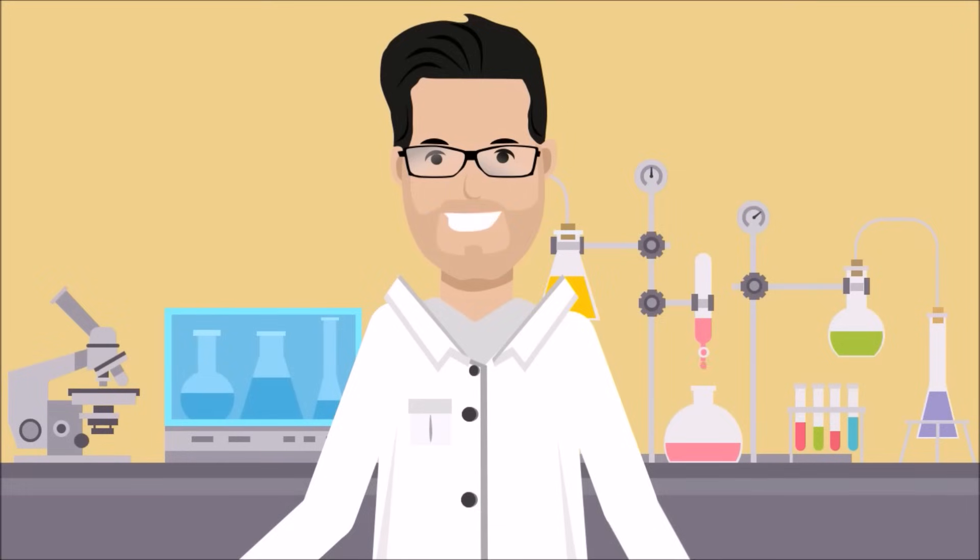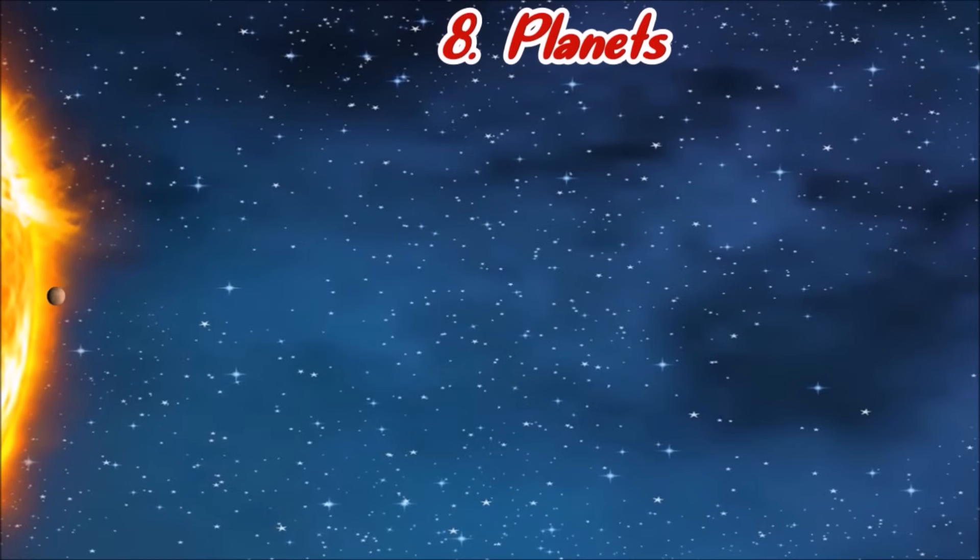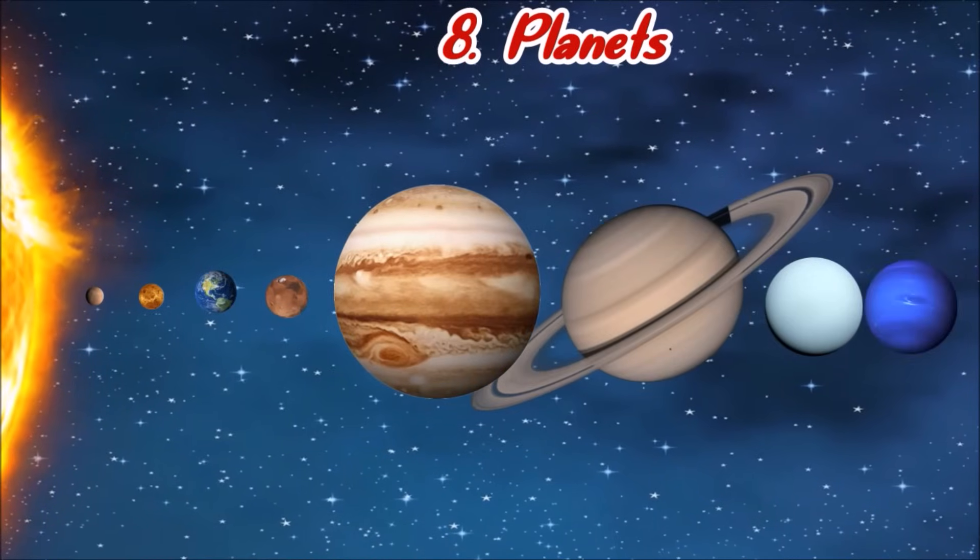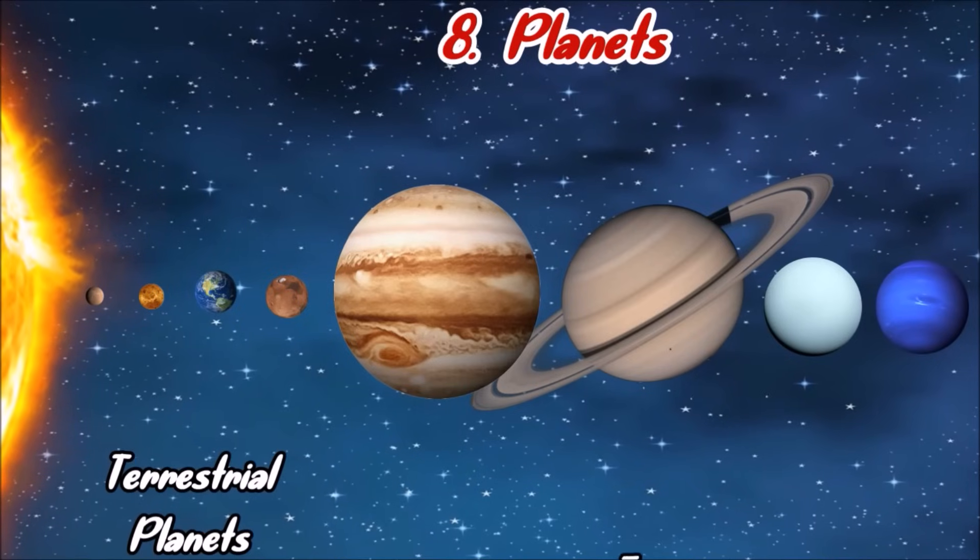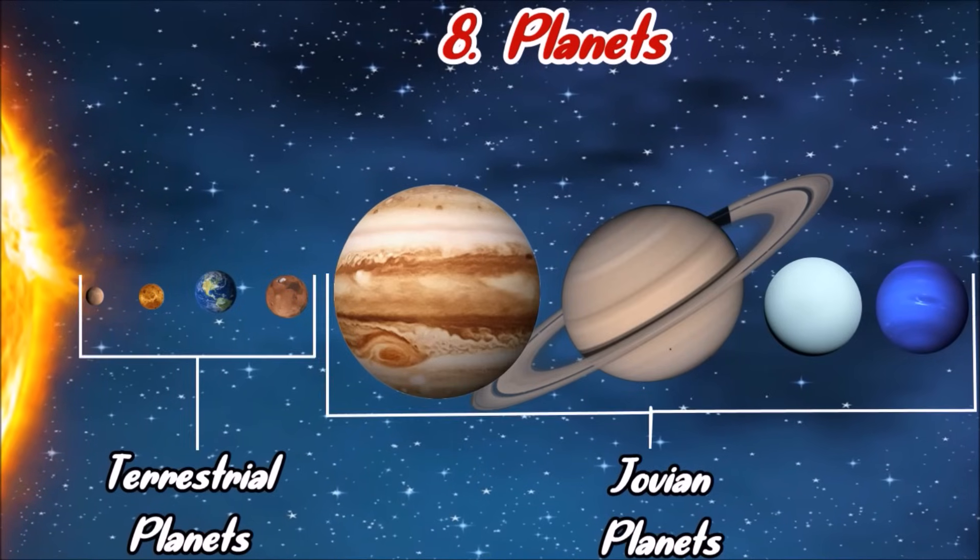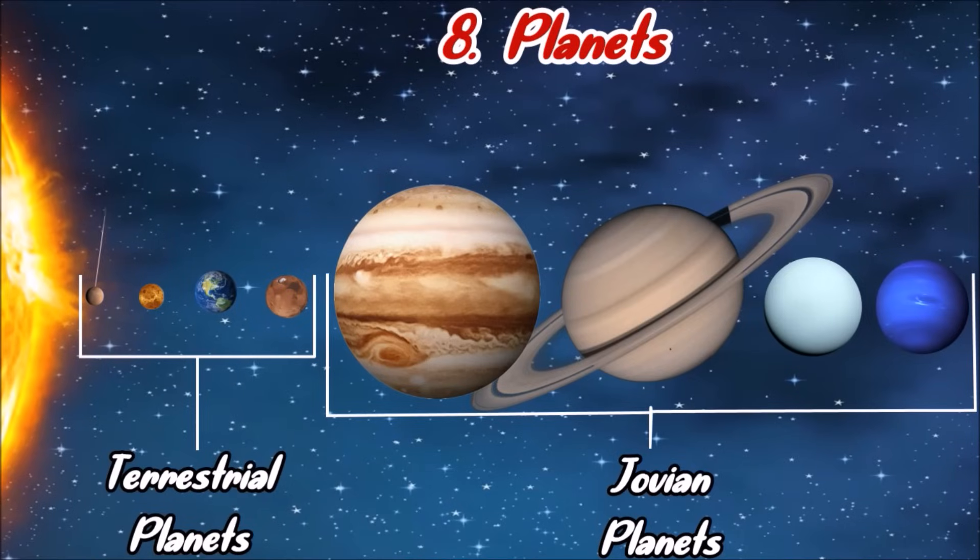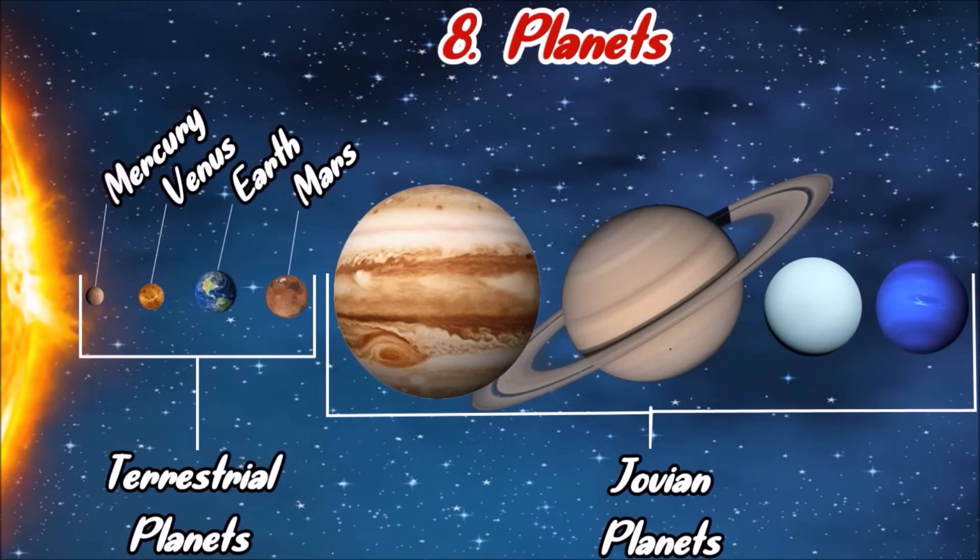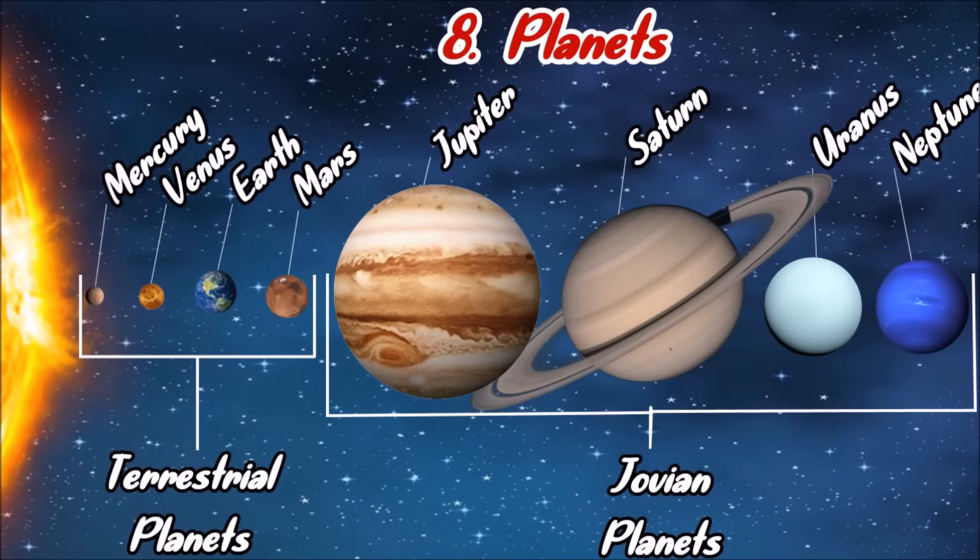What about planets? The planets are also members of the solar system. The solar system has eight planets. It is classified into terrestrial and Jovian planets. The planets in the solar system are Mercury, Venus, Earth, Mars, Jupiter, Saturn, Uranus, and Neptune.